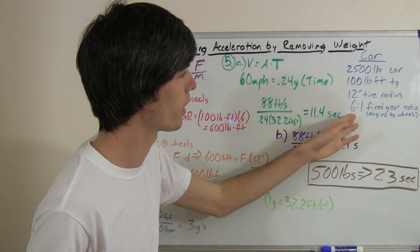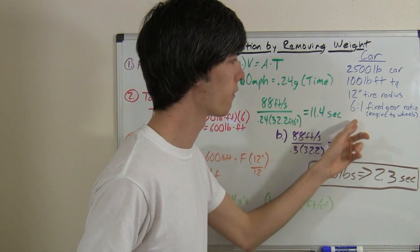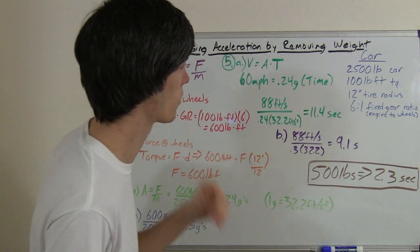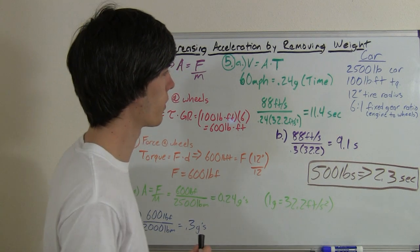So that could be, for example, a 3 to 1 first gear and then a 2 to 1 differential, and then you'll have a 6 to 1 ratio going out on the driveshaft to the wheels.